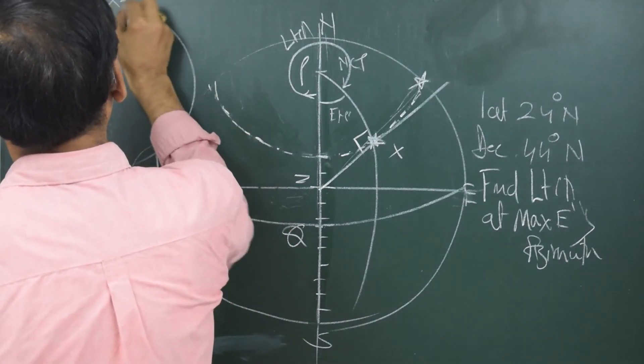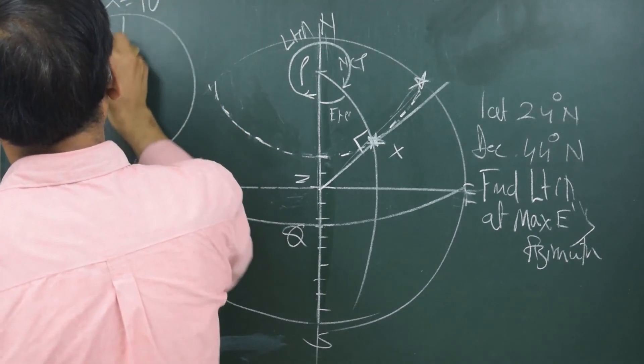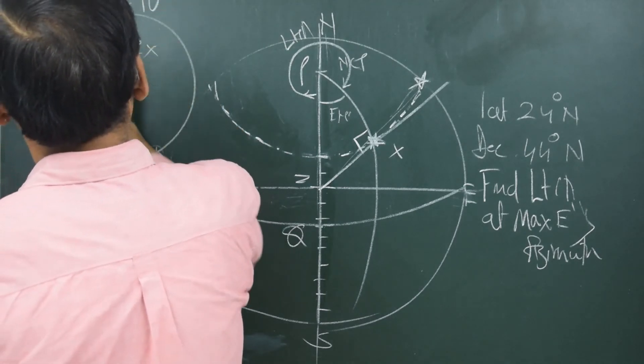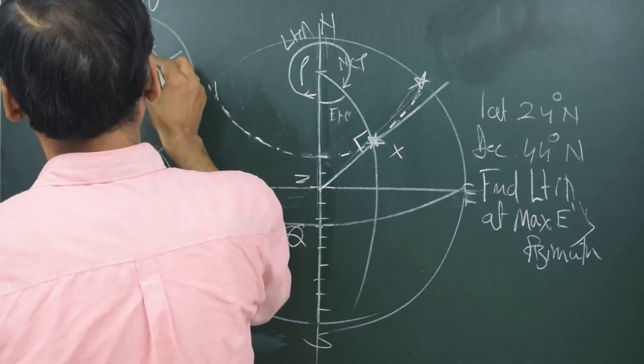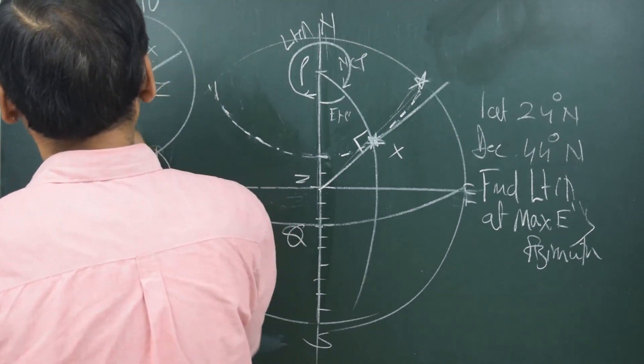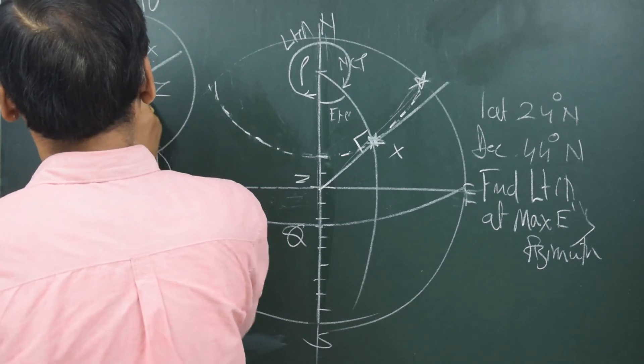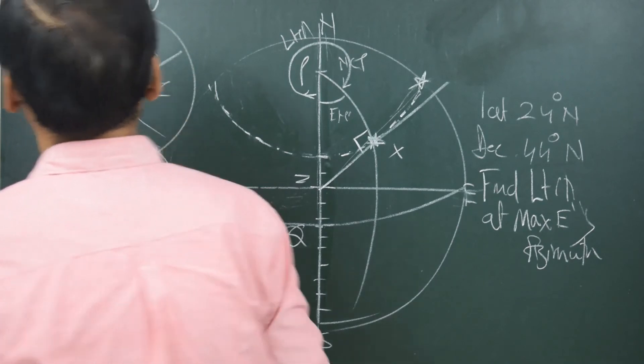Let me draw a Napier circle. Whatever is 90 I write down on top. Neighbors of 90 are P, X and Z, X. Neighbors of P, X are X and P. Neighbors of Z, X are X and Z. The remaining is P, Z. This is how I make the Napier's triangle.